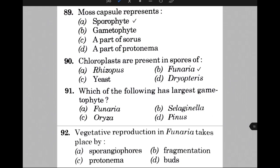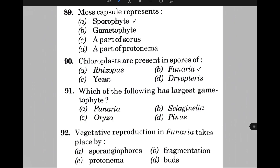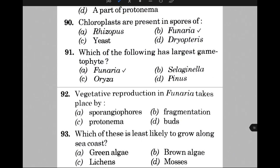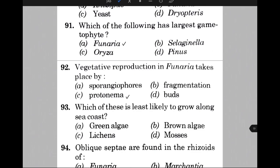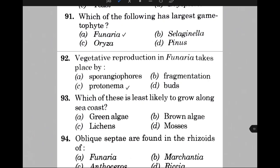Vegetative reproduction in Funaria takes place by — the answer is protonema. Which of these is least likely to grow along the sea coast? The answer is D, that is mosses. Oblique septa are found in the rhizoids of — the answer is A, that is Funaria.